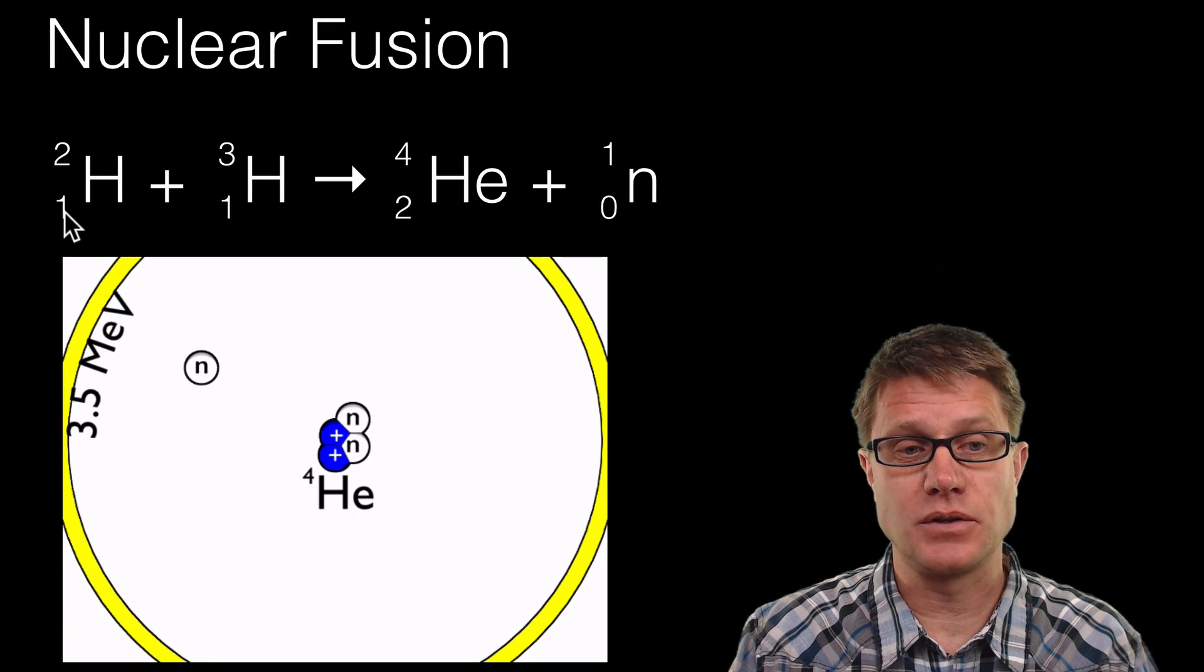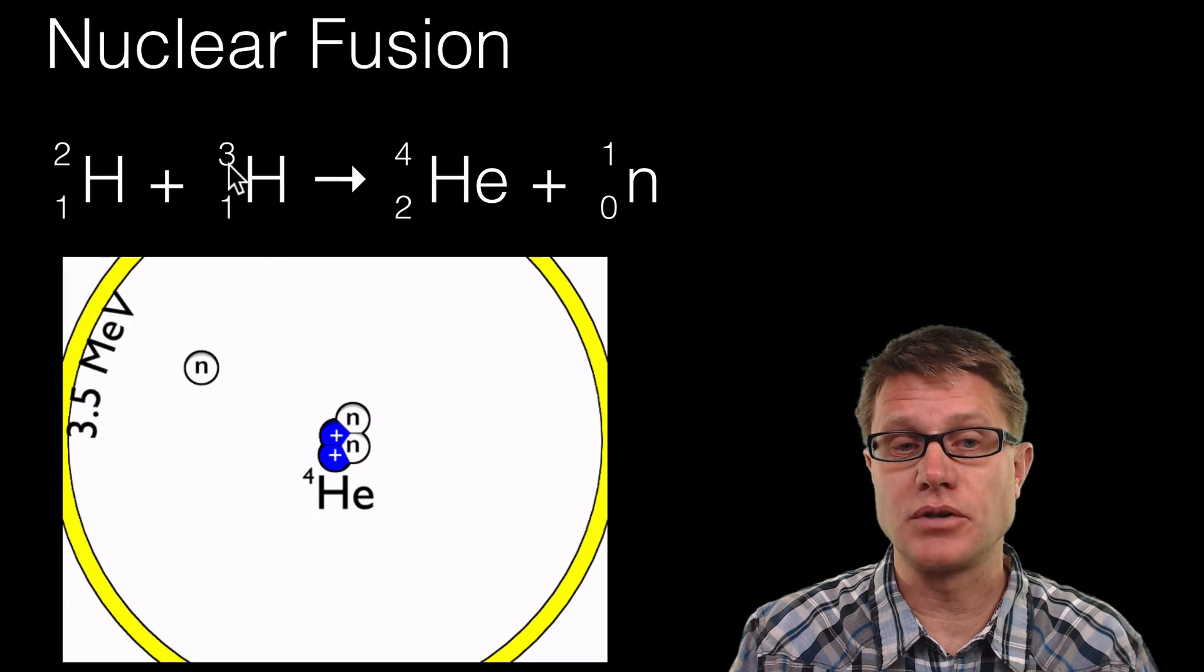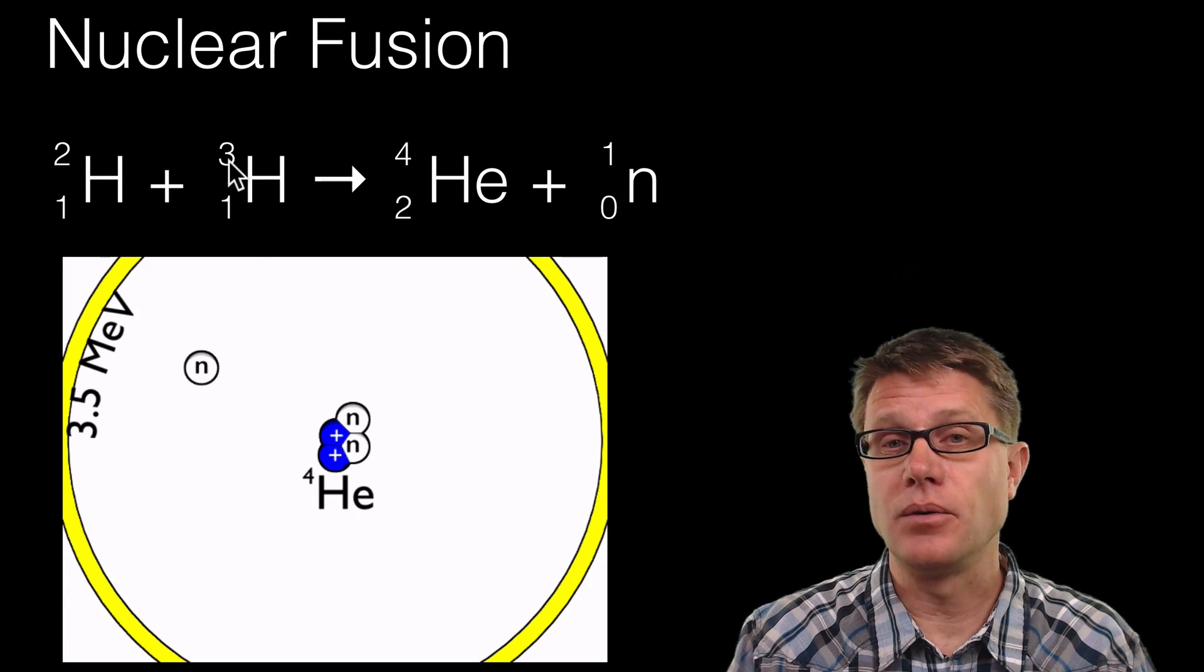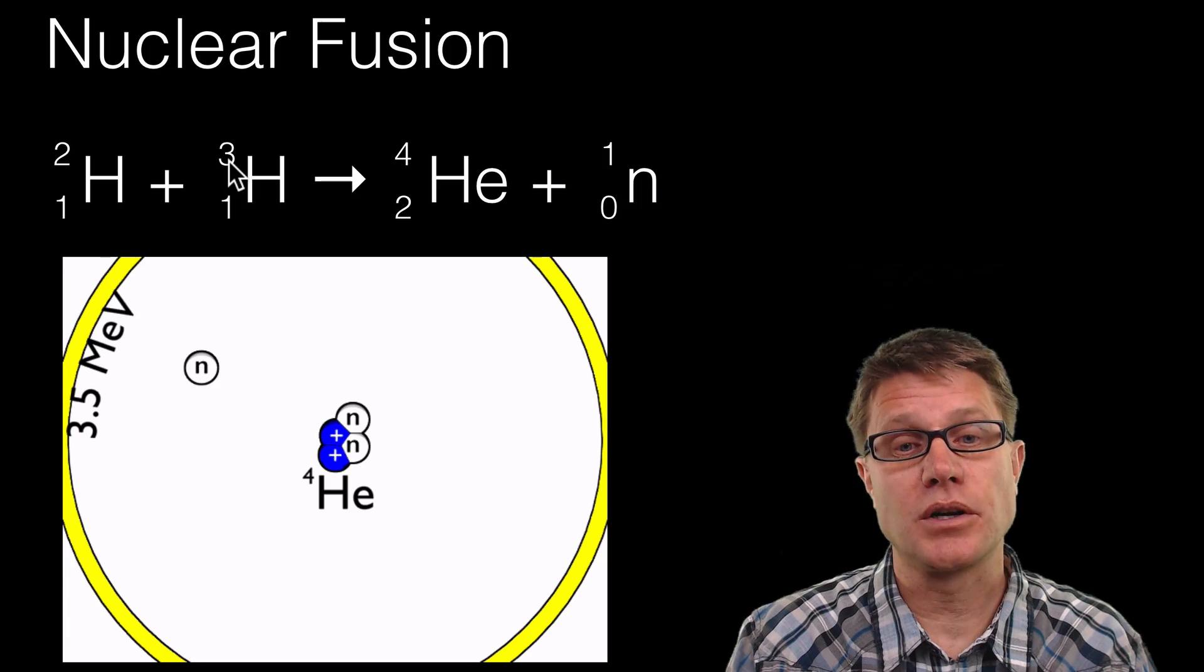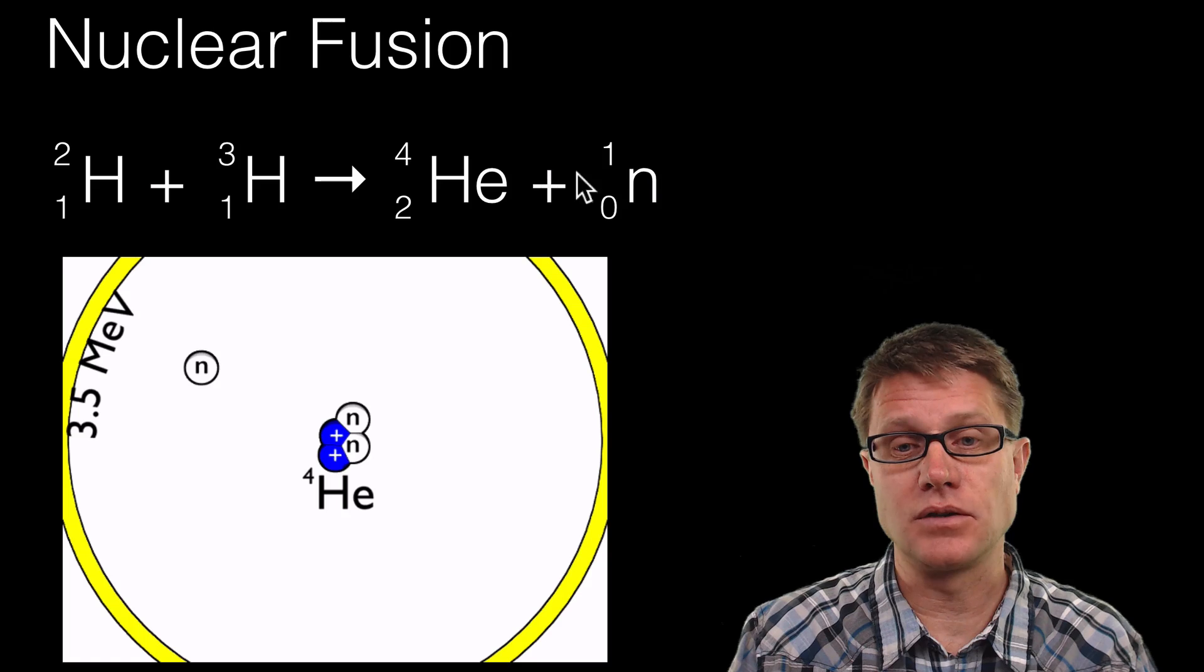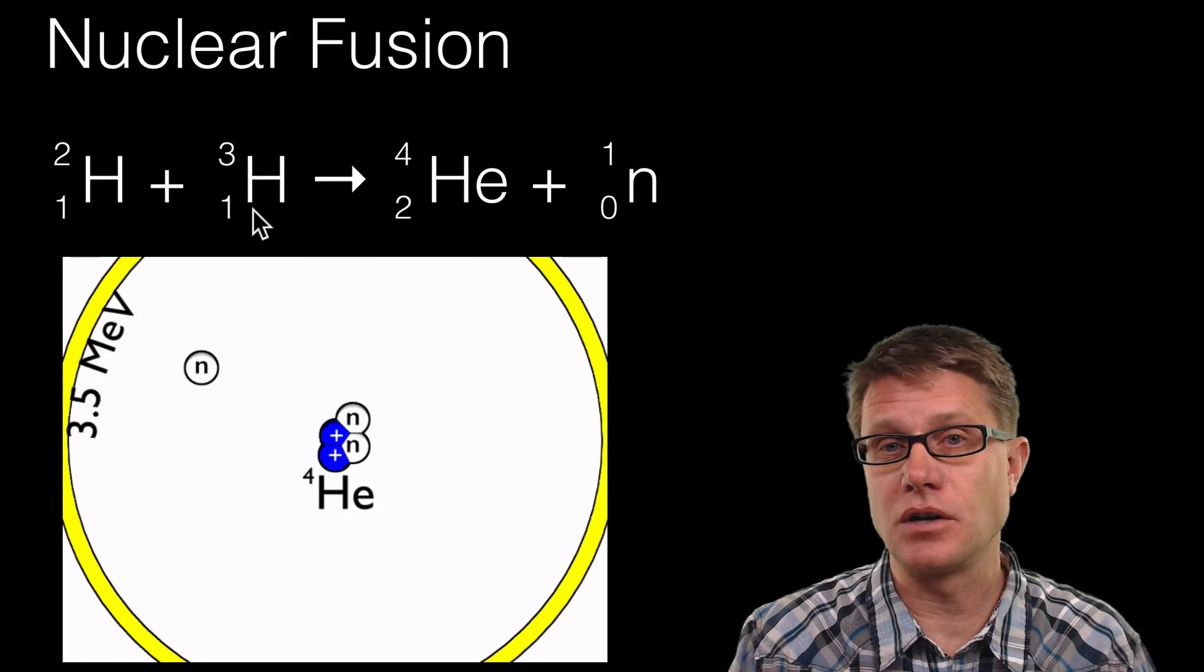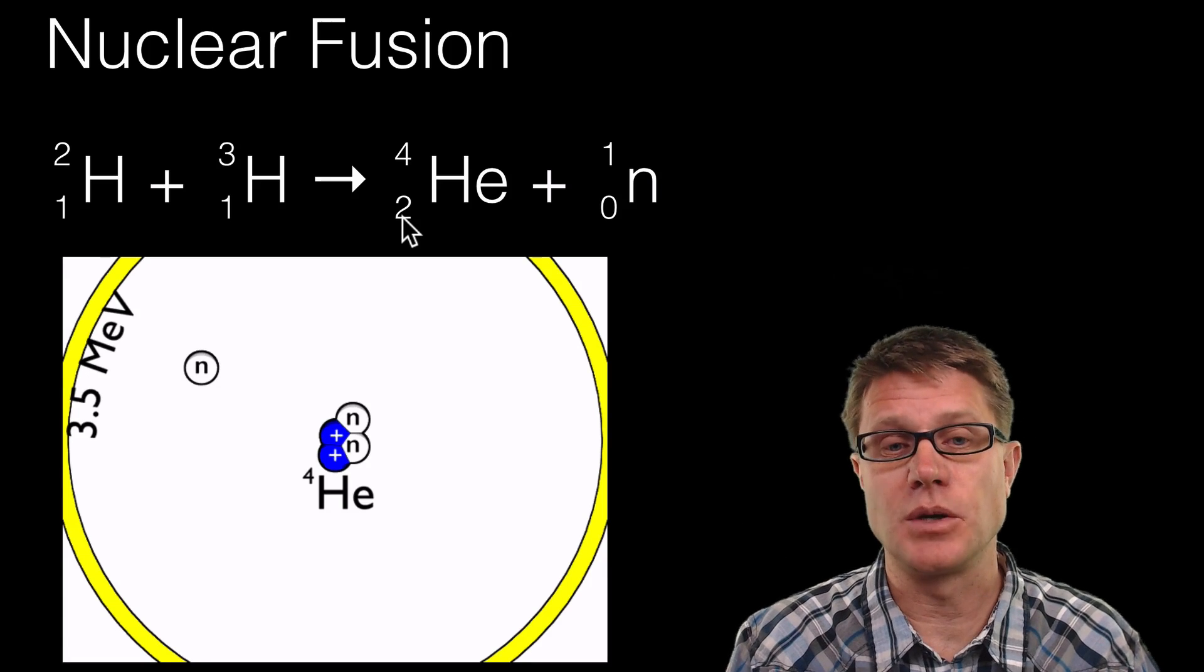This is the deuterium. So it has got one proton, one neutron. And then this is the tritium, one proton, two neutrons. And so is a nucleon number conserved? Well when we are done we have 5 nucleons to begin with. We have 5 nucleons when we are done. So it is conserved. If we look at charge, we had two positive charges before, two positive charges after. And so charge is going to be conserved as well.